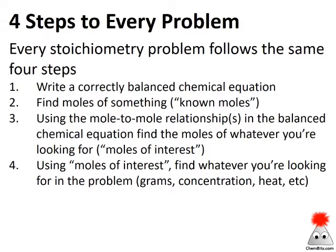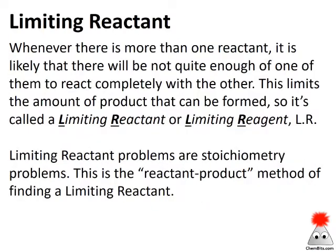To start, we have to recognize that limiting reactant problems are stoichiometry problems, and every stoichiometry problem can be solved using the same four-step process. First, write a balanced chemical equation. Next, find moles of something in that balanced equation that we have information for. After that, use the relationships in the balanced chemical equation to convert the moles we know to the moles we're looking for. Finally, those moles of interest can be converted out to whatever we're looking for in the problem.